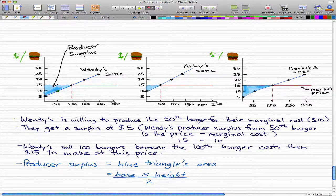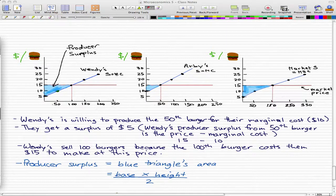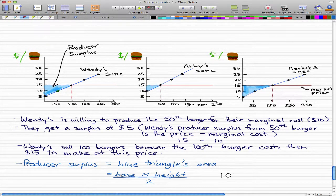Now something about my formula here, how we calculate the producer surplus is using this blue triangle. So let's just take Wendy's as an example. You can see that base times height divided by 2. So let's just find our base. For Wendy's is 100. And our height is 10 because we take 15 minus 5. Well, that's 10.